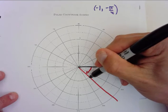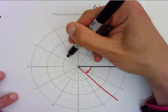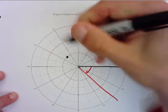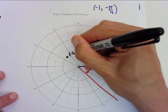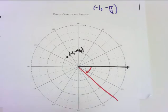So, I've got to go opposite of my terminal side, which is right here. There is where -1, -π/4 is going to be located.